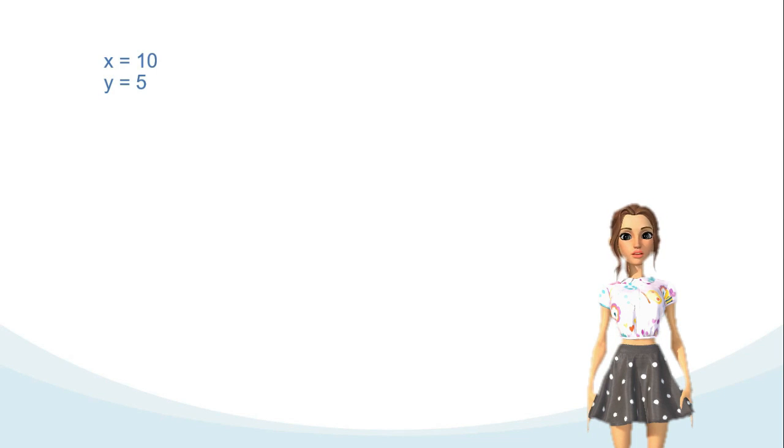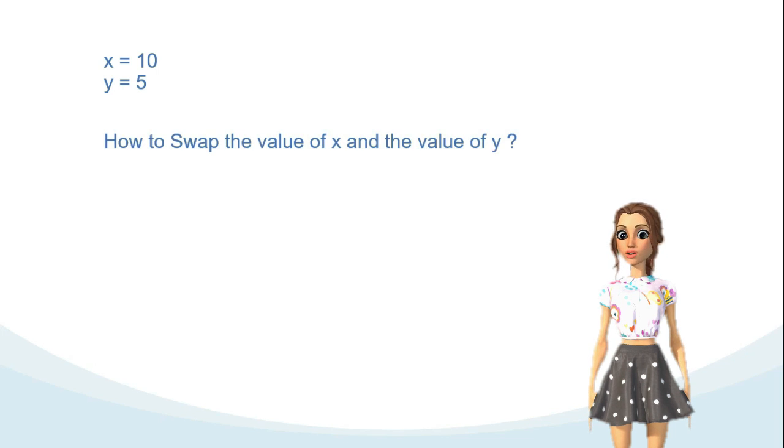If you are given two variables like this: x equals 10, which means x holds 10, and y equals 5, which means y holds 5, how to swap the value of x and the value of y so that x equals 5 and y equals 10? Is it x equals y or y equals x?